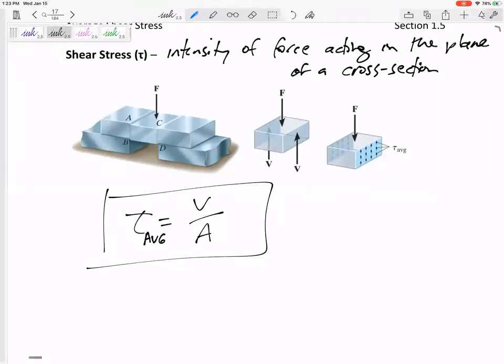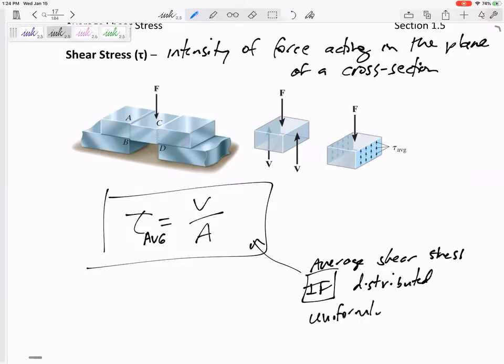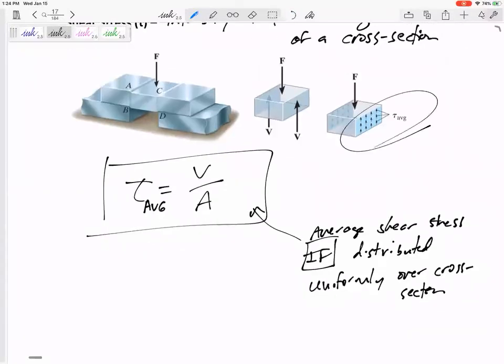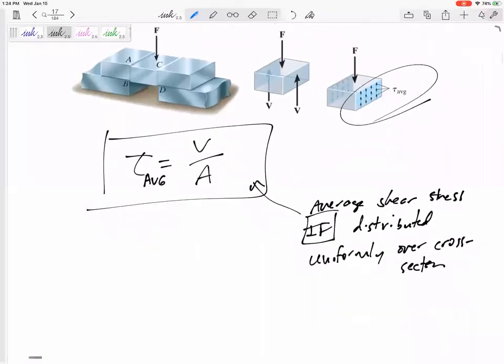This is tau average. This is the average shear stress if it was distributed uniformly over the cross-section. It actually is not. This is not a good assumption, but for now...